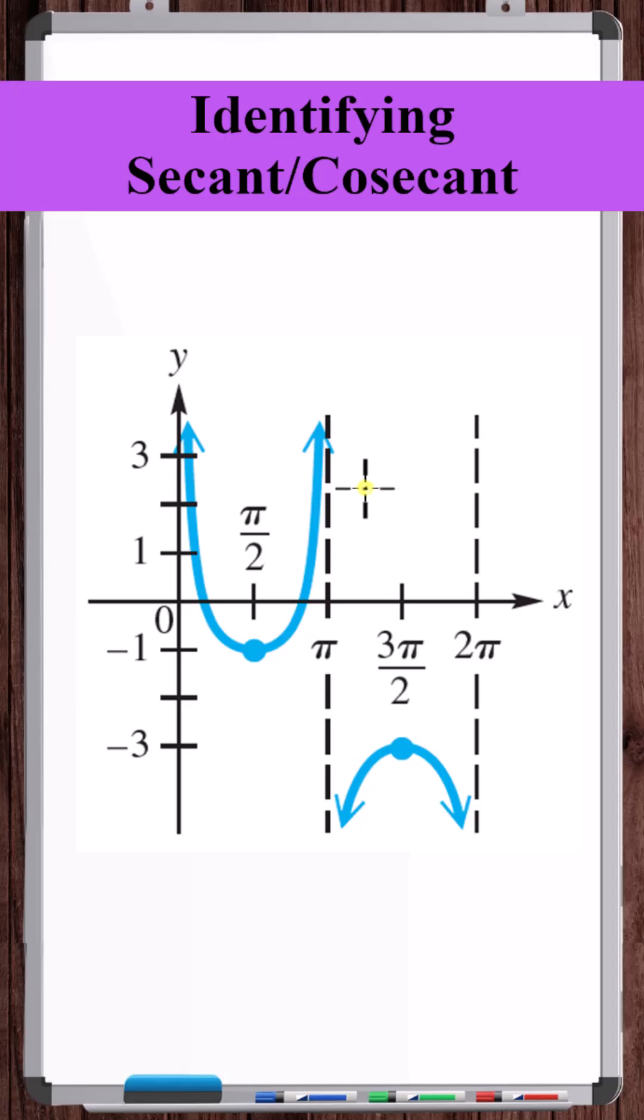To get the simplest formula, we would rather not include any horizontal shifting. Based on the location of the vertical asymptotes, the first vertical asymptote starting at the y-axis, we can see this is an unshifted cosecant.